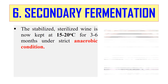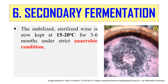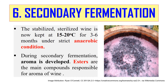Next is secondary fermentation, carried out in stainless steel or concrete tanks lined with plastic. The stabilized and sterilized wine is kept at 15–20°C for 3 to 6 months under strict anaerobic conditions, meaning no trace of oxygen. For sweet wine, fermentation is terminated when the sugar content is reduced to 4–6%. During secondary fermentation, the aroma of wine is developed due to reactions among acids like malic acid, citric acid, sugars, alcohols, and phenolic compounds. The main compounds responsible for aroma are methoxypyrazine, monoterpenes, and esters.